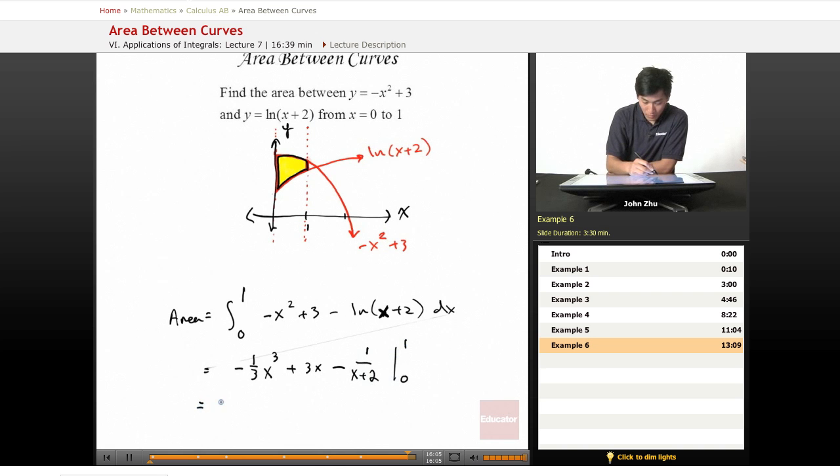So plugging everything in, we get negative one third plus three minus one third minus zero zero plus zero minus a half, which equals approximately 2.83.